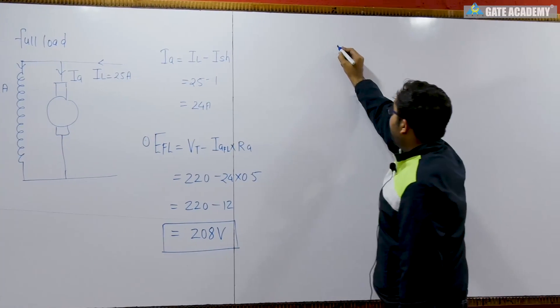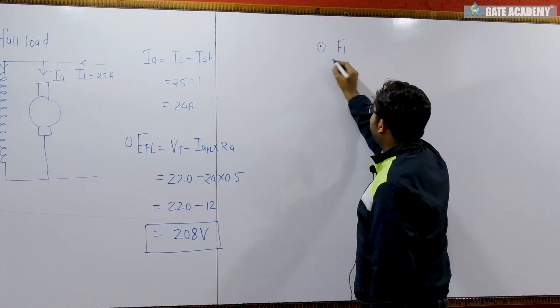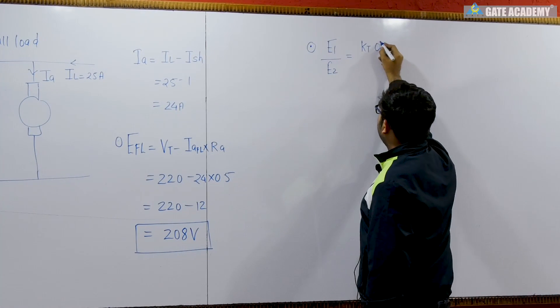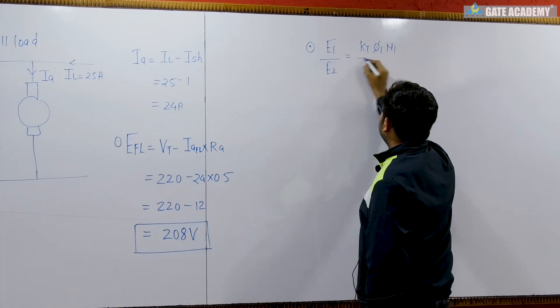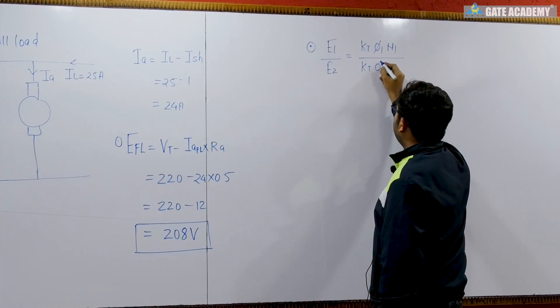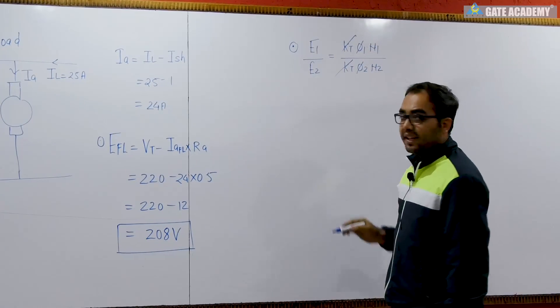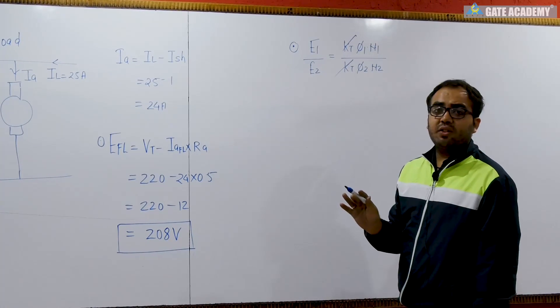Now to find the speed, we can use the formula E1 by E2 is equal to kt phi 1 N1 upon kt phi 2 N2. Now the same motor we are using, so motor constant will be same. We are not going to change the voltage or field resistance, so flux will also be constant.